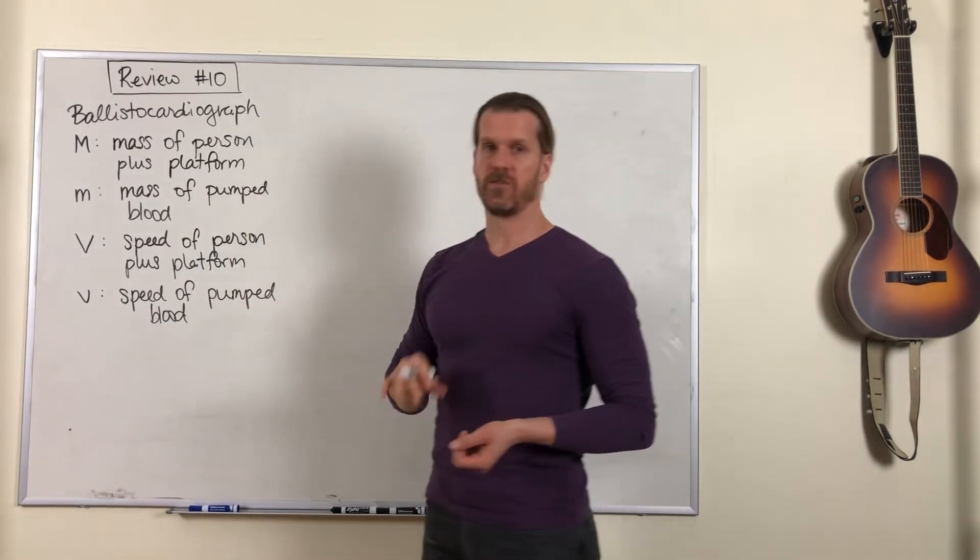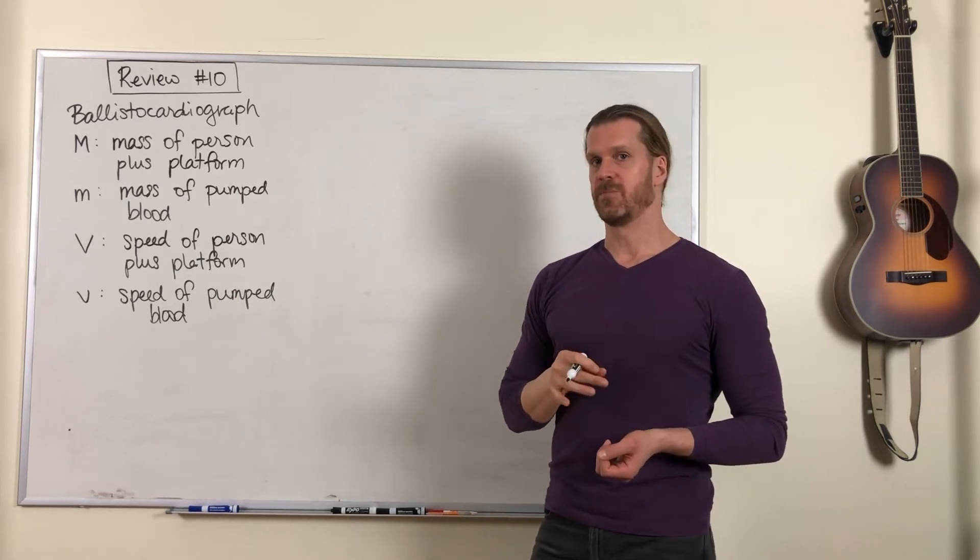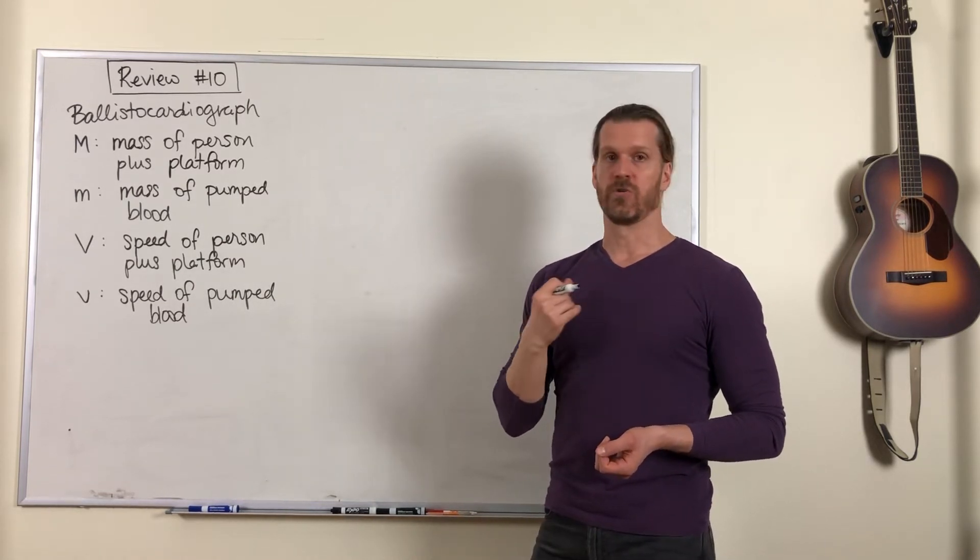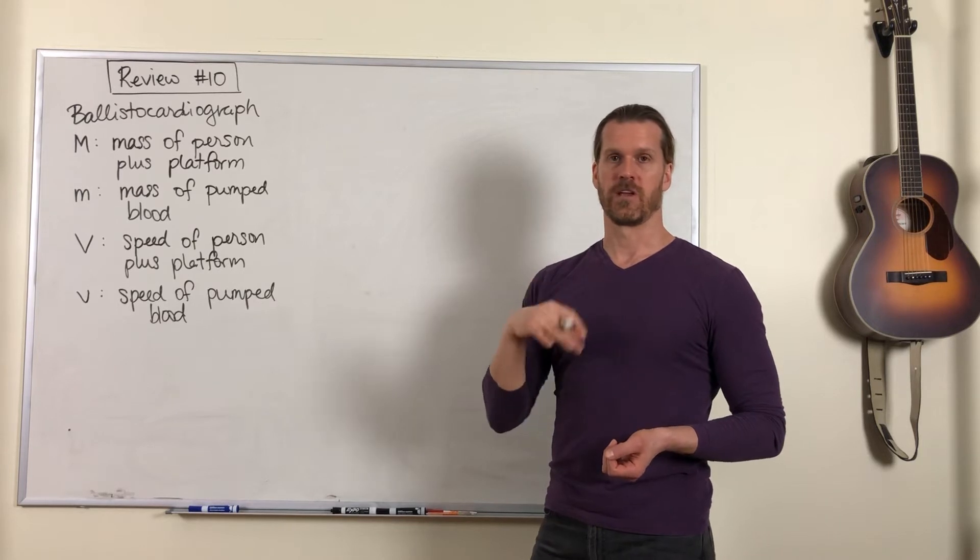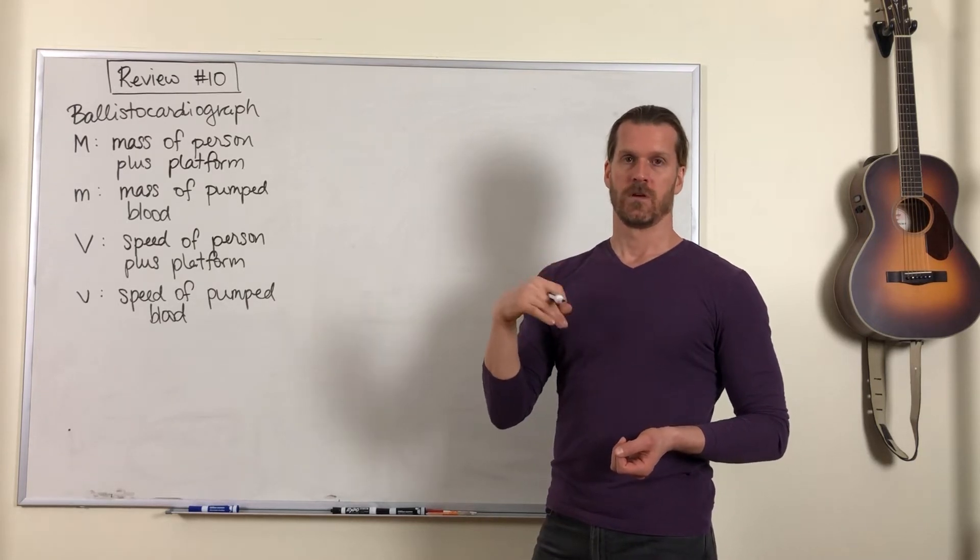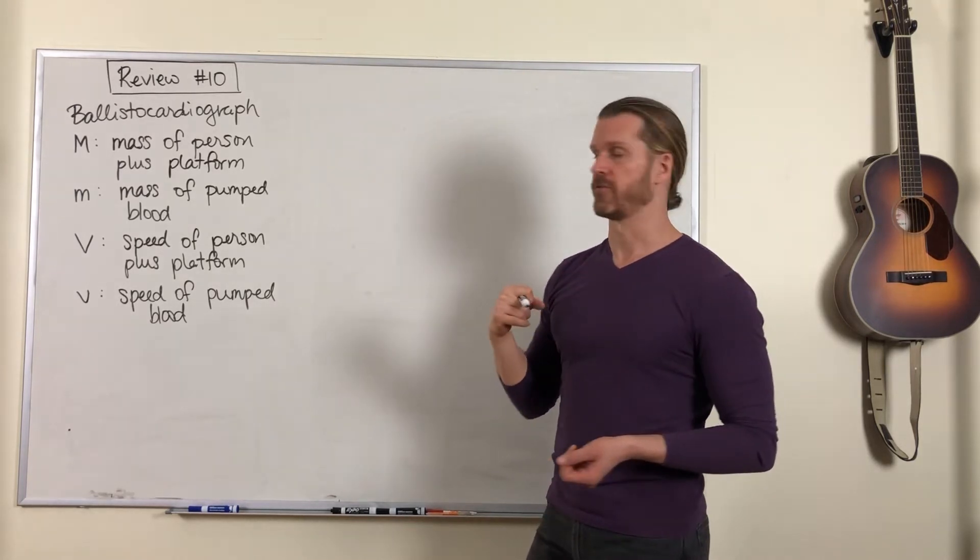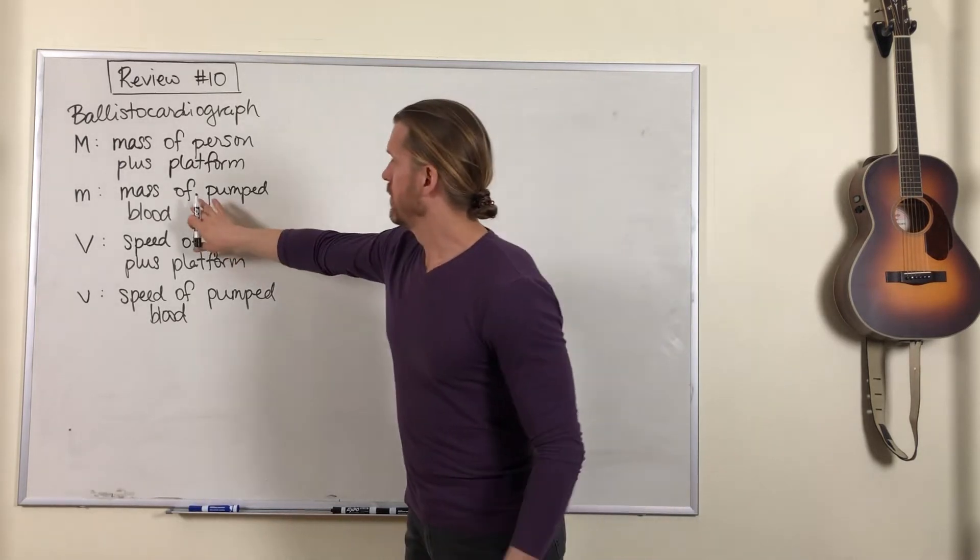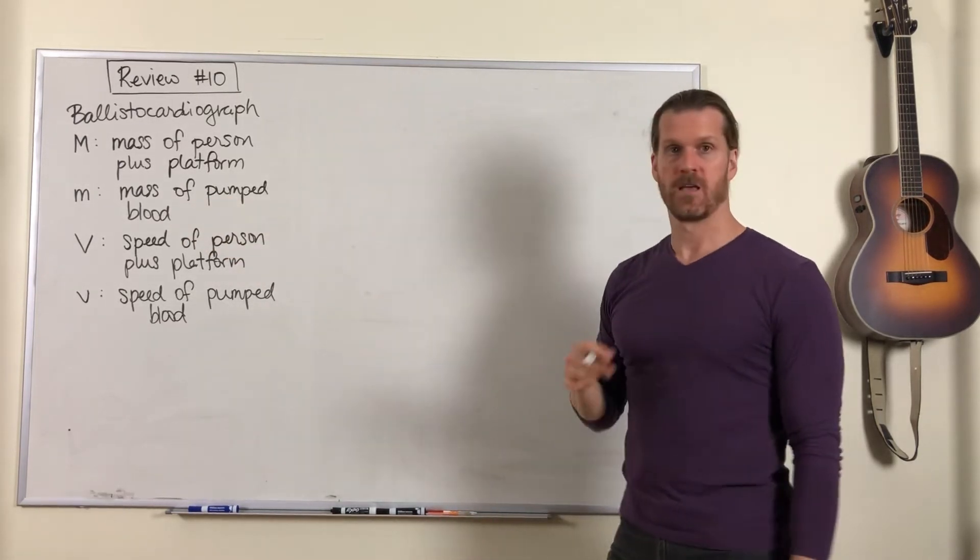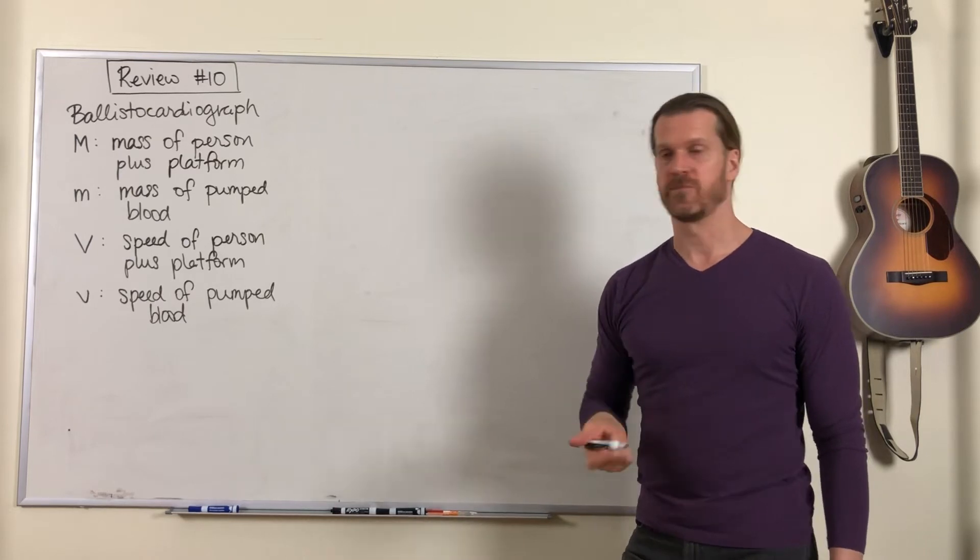And we also need to know the speed of the pumped blood. That can be done with an independent measurement, like an ultrasound of the person's heart, and you can observe the speed of the blood from that ultrasound. So we're going to determine the mass of pumped blood, and we'll use the law of conservation of momentum to do it.